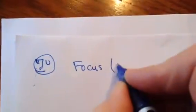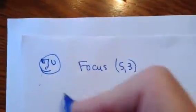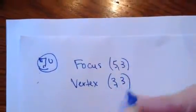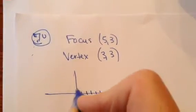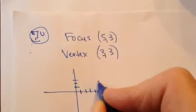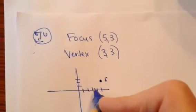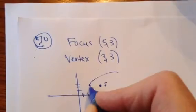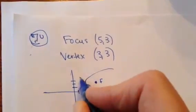Now let's do number 70. My focus is (5, 3) and my vertex is (3, 3). When I plot this out: 1, 2, 3, 4, 5 and 1, 2, 3 — here right here is my focus, and my vertex is at (3, 3). That tells you it's going to open to the right.